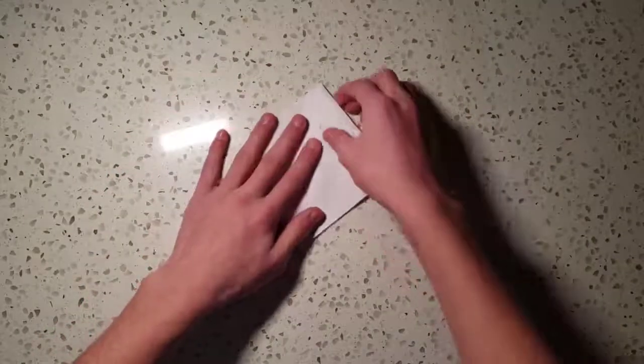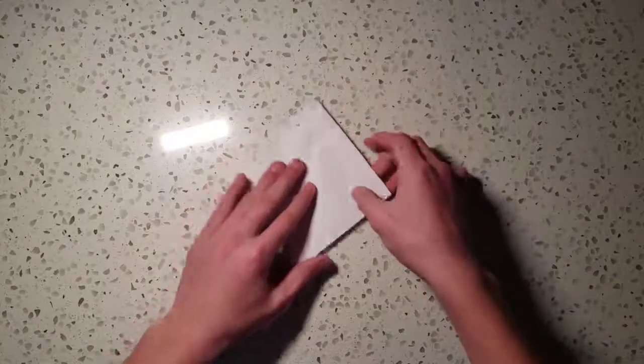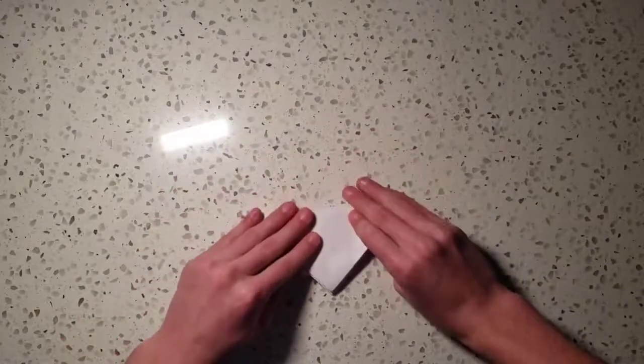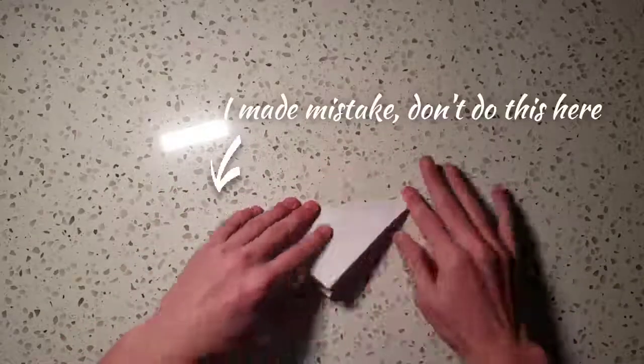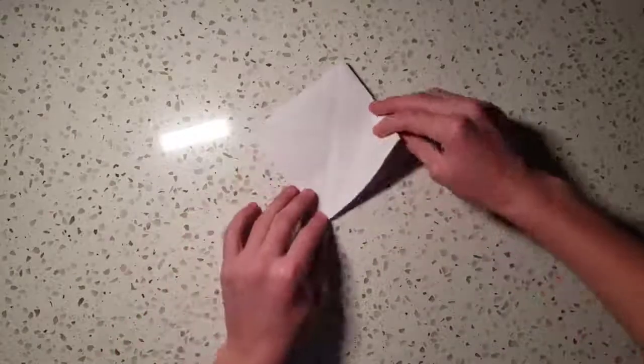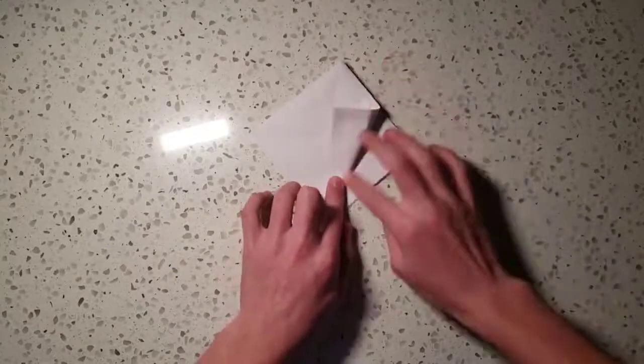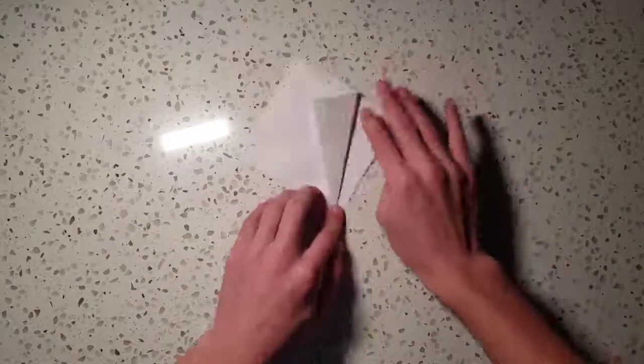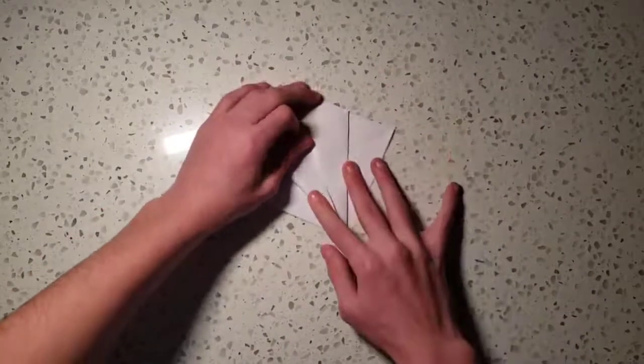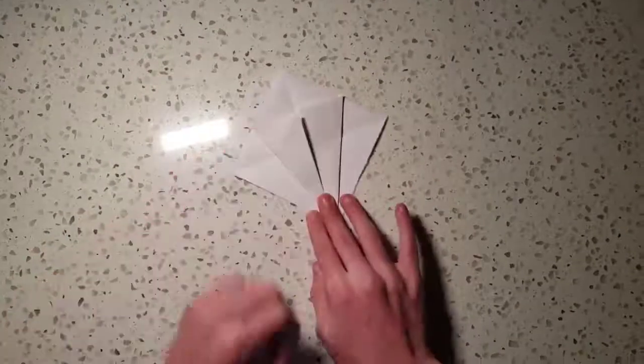So then you're going to do something called a petal fold, which is kind of easy. So you fold the top down in half. You do this like that. You do kind of like the origami Christmas tree. Like this.